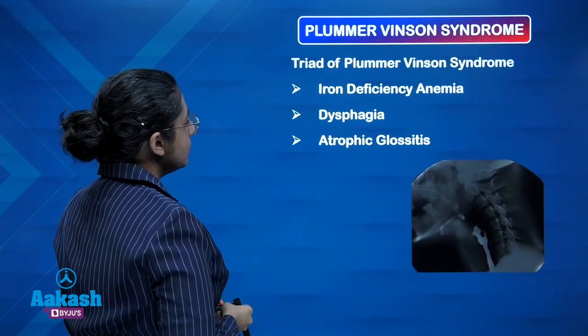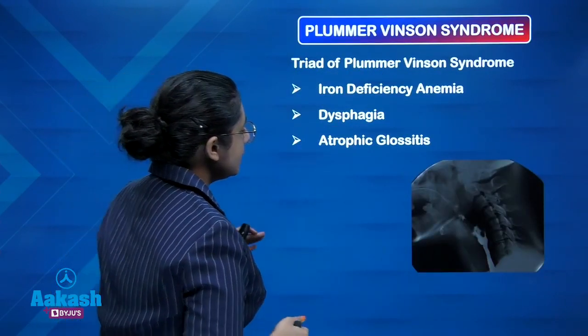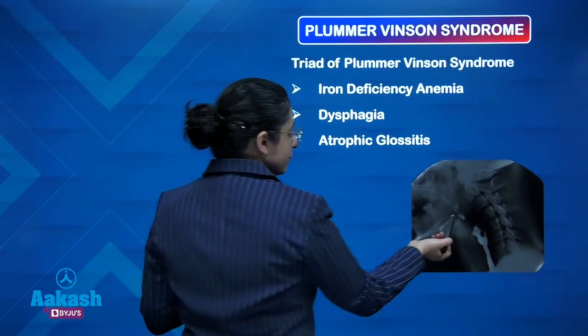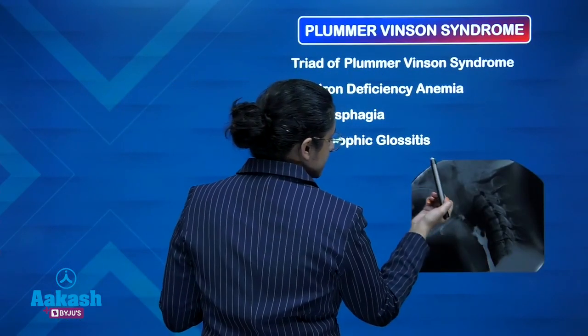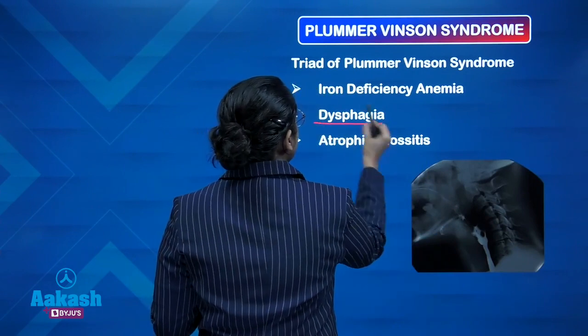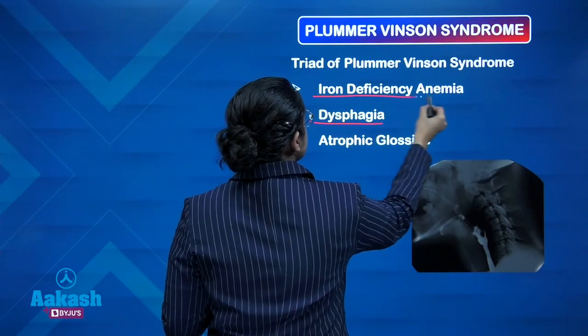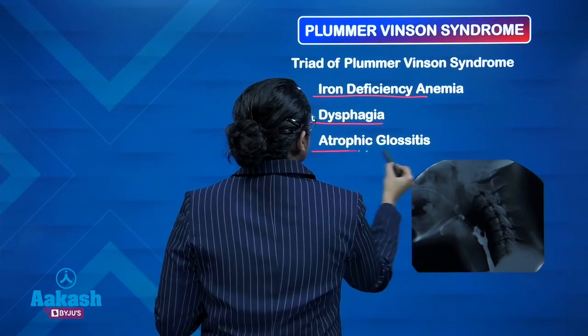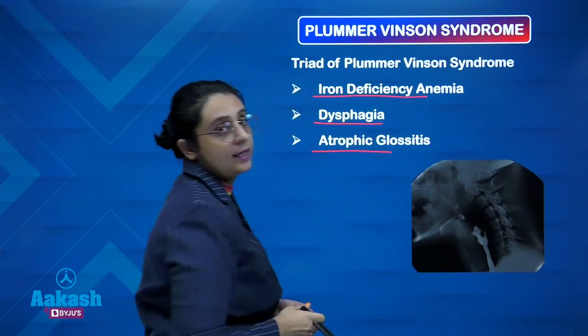Plummer-Vinson syndrome: thin esophageal membranous webs leading to dysphagia, iron deficiency anemia, and atrophic glossitis.